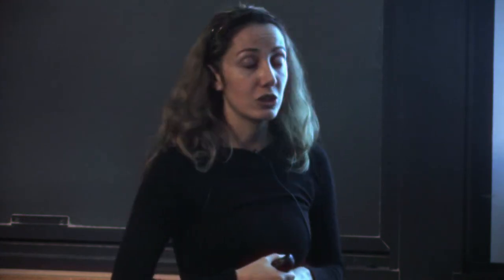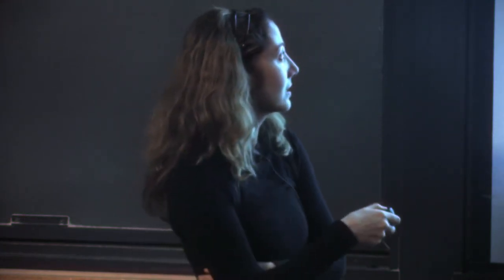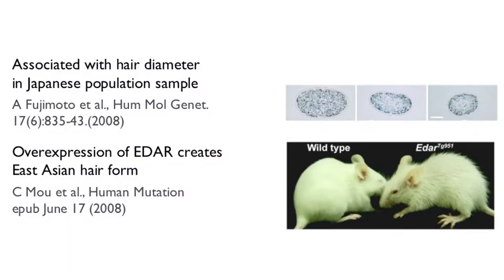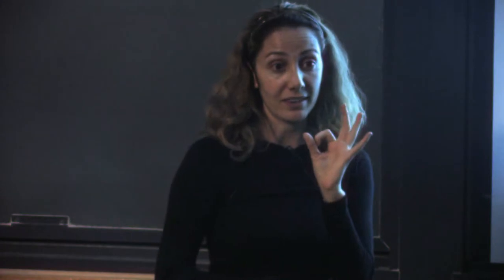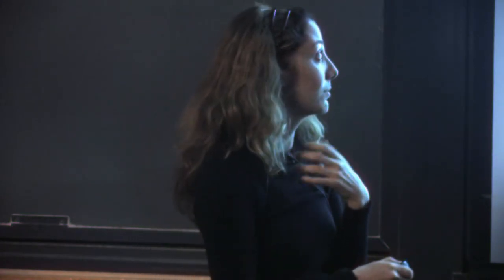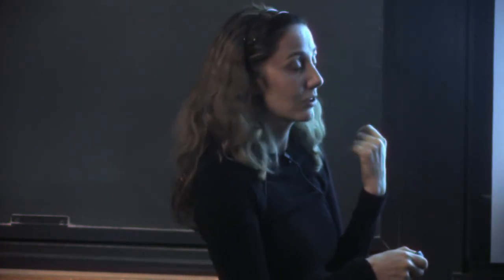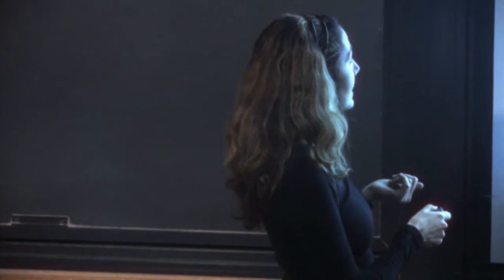People in Asia have been doing work to show what the phenotype might be. There was a study showing hair diameter — the width of hair on the head — where individuals who carry the Asian selected allele have double the hair width compared to those who don't carry it, with heterozygotes at an intermediate level. In Asia, you see that long, thick, straight hair driven by this mutation.